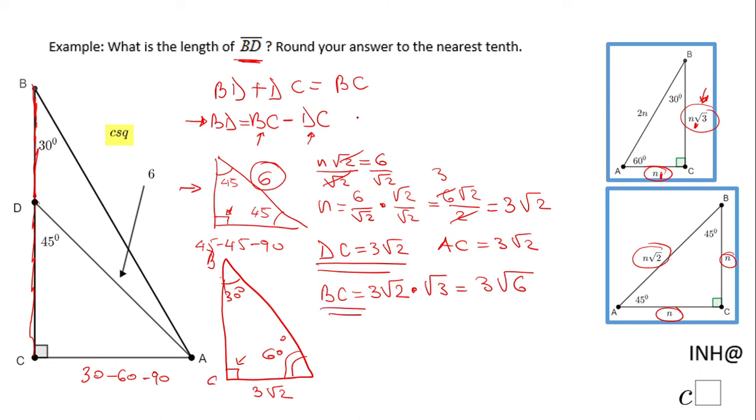We can go back here and we can find BD. BD = BC, which is 3√6, minus 3√2.